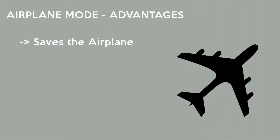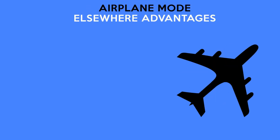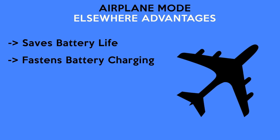The flight in the air is completely dependent on its navigation system for travel. To ensure safety and comfort, airplane mode is a must. Beyond aviation, the advantages of airplane mode include: it saves the plane from crashing, it gives us comfort in air travel, it saves battery, it speeds up battery charging, and it gives us an immense level of freedom from our phone.